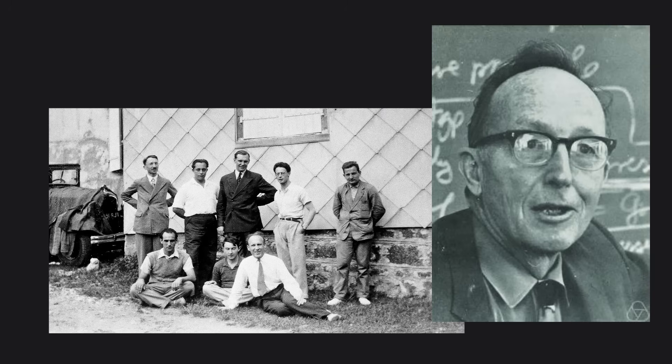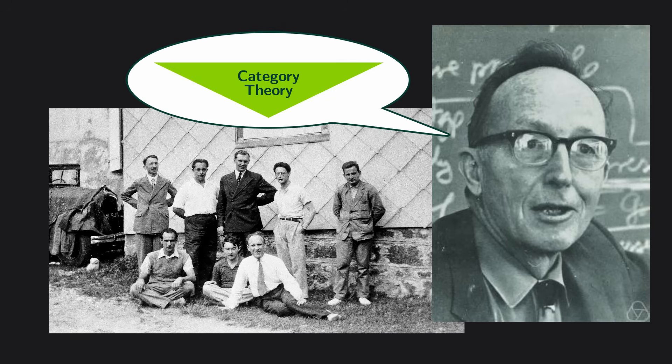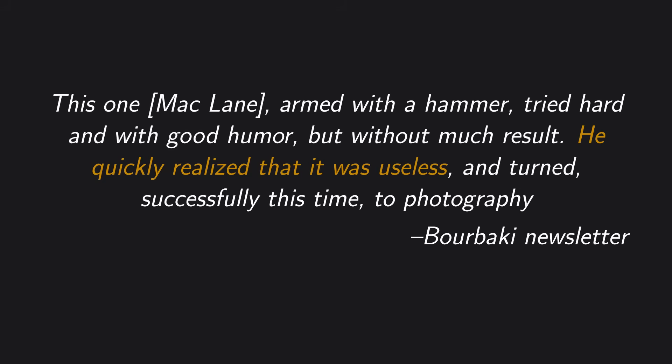The Bourbaki folks were not on board with this. Saunders Mac Lane, one of the co-inventors of category theory, went to one of Bourbaki's meetings in 1954 to try and convince them to embrace the category theoretic point of view. But this was unsuccessful. And indeed, Bourbaki would never truly embrace category theory.